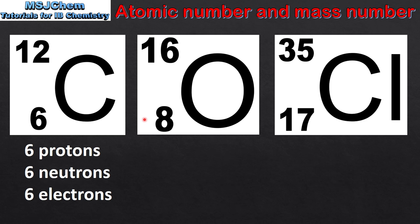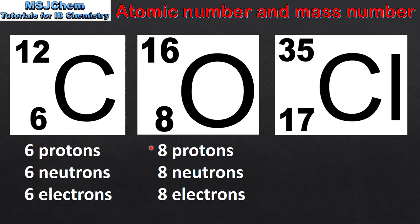The next example is oxygen-16. The atomic number is 8, which means there are 8 protons in the nucleus of the atom. The mass number is 16, so if we subtract the atomic number from the mass number we get the number of neutrons. So oxygen-16 has 8 protons and 8 neutrons. Because it's a neutral atom the number of electrons is equal to the number of protons, therefore it has 8 electrons.